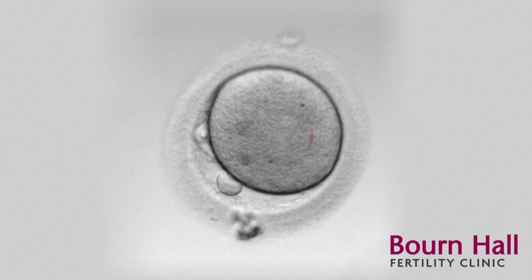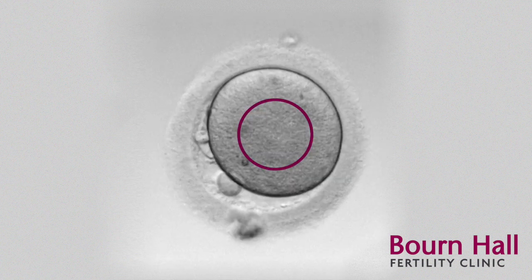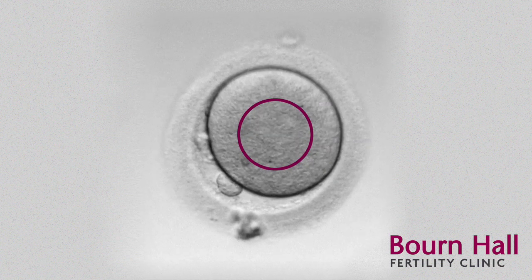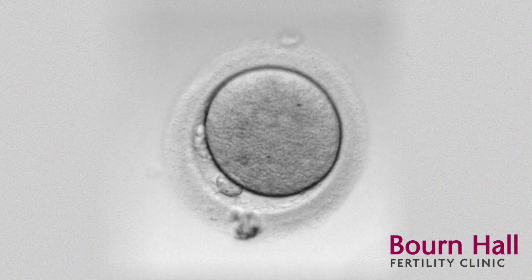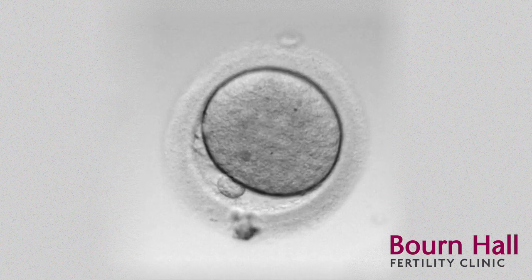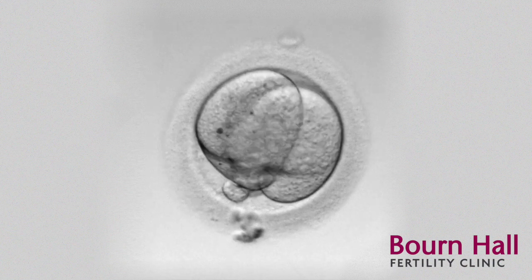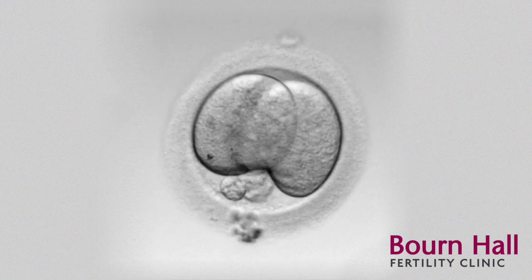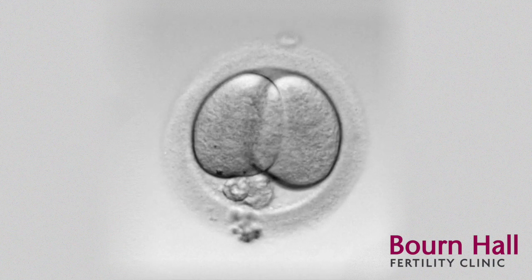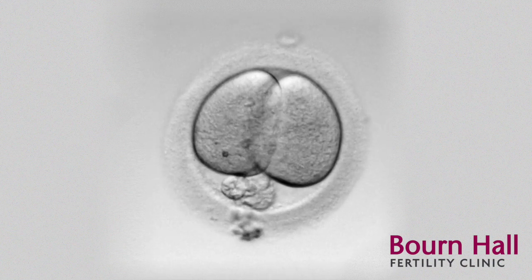The circular areas then merge into what we call a syngamy, which we can see here, and the embryo is now up and running, with the first cleavage here taking it from one to two cells.